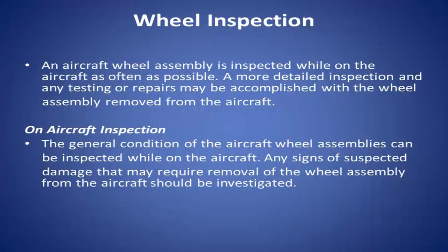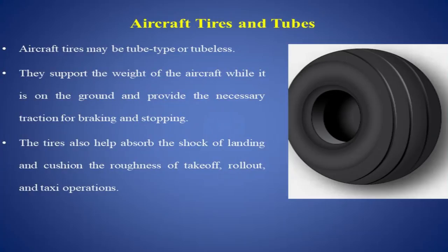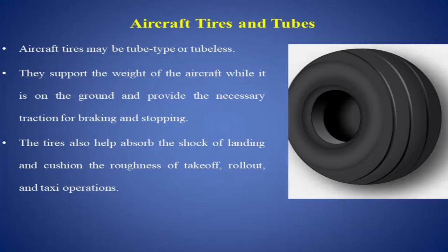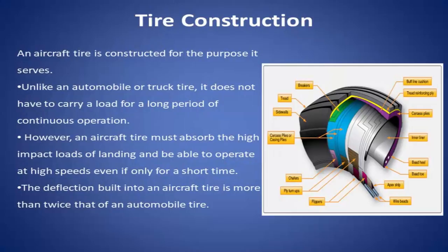Coming to tyres and tubes, aircraft tyres may be tube type or tubeless type. They support the weight of the aircraft while it is on the ground and provide the necessary traction for braking and stopping. Tyres also help absorb the shock of landing and cushion the roughness of takeoff, rollout and taxi operations. In the diagram you can see a cross-sectional view of a tyre. An aircraft tyre is constructed specifically for the purpose it serves.